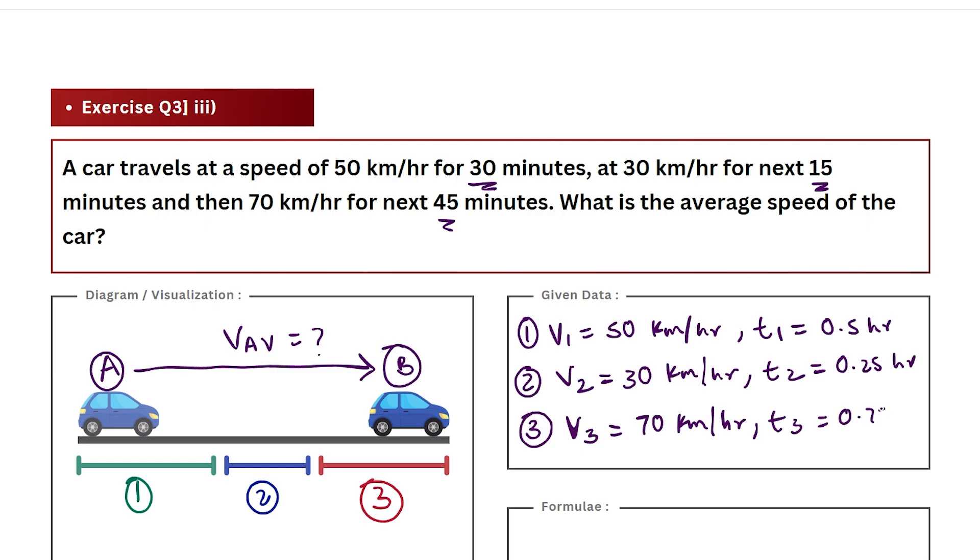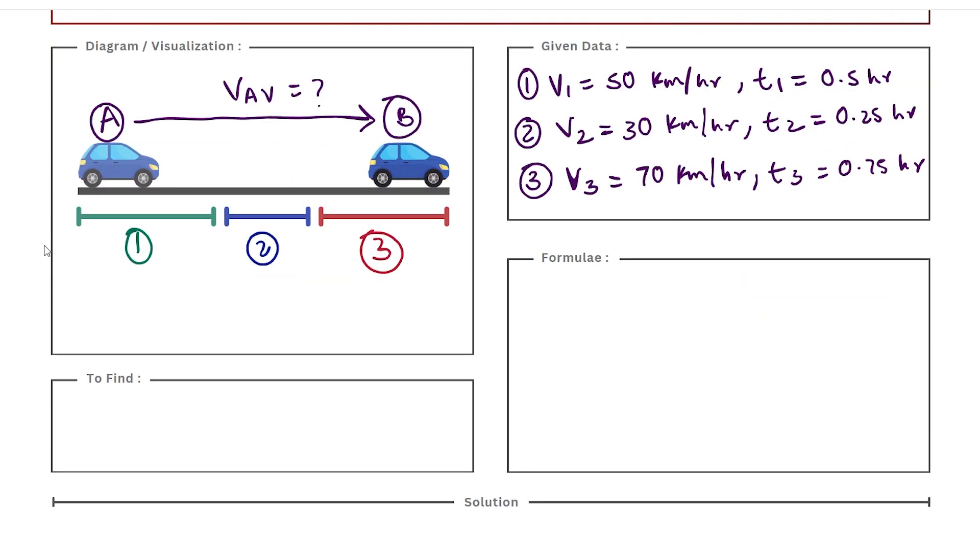With this we have completed all our given sets of data and we already know what we are going to find. We have to find the average speed for the car when it travels from A to B. Now intuitively students might say we have three sets of velocities and we need average speed so we'll add these three speeds and divide by three and we get our average. Well that might work for you in math but not in physics.